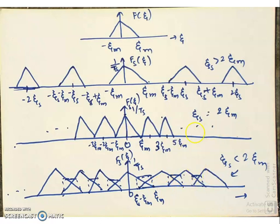How to avoid aliasing? We can avoid aliasing by limiting the spectrum of F of t to ζs/2. If we limit the maximum frequency component in F of t to ζs/2, we will not have aliasing. Alternatively, if we sample the signal at greater than twice the maximum frequency component in the signal, we will not get aliasing. There are two approaches: take a higher sampling frequency greater than twice the maximum frequency component, or limit the signal using a low-pass anti-aliasing filter.